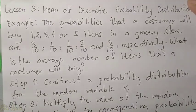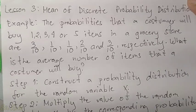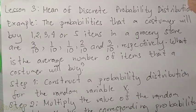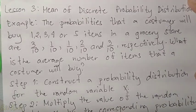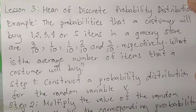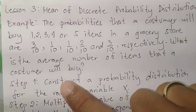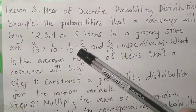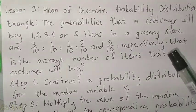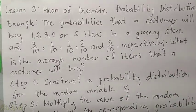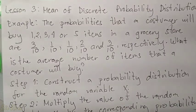Good day. Our lesson for today is Lesson 3: the mean of a discrete probability distribution. Example: the probabilities that a customer will buy 1, 2, 3, 4, or 5 items in a grocery store are 3/10, 1/10, 1/10, 2/10, and 3/10 respectively. What is the average number of items that a customer will buy?